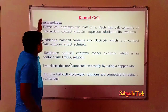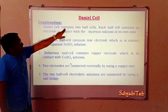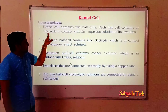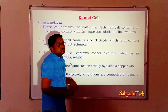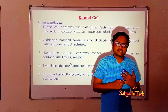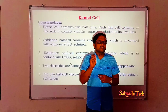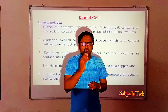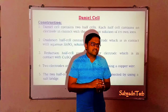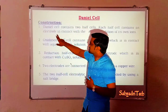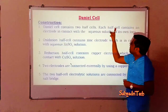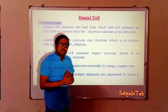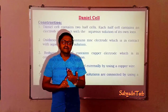Coming to the construction of the Daniel cell: first, the Daniel cell contains two half cells. Each half cell contains an electrode in contact with the aqueous solution of its own ions. Like a general galvanic cell, the Daniel cell consists of two half cells — one is the oxidation half cell and the other is the reduction half cell.